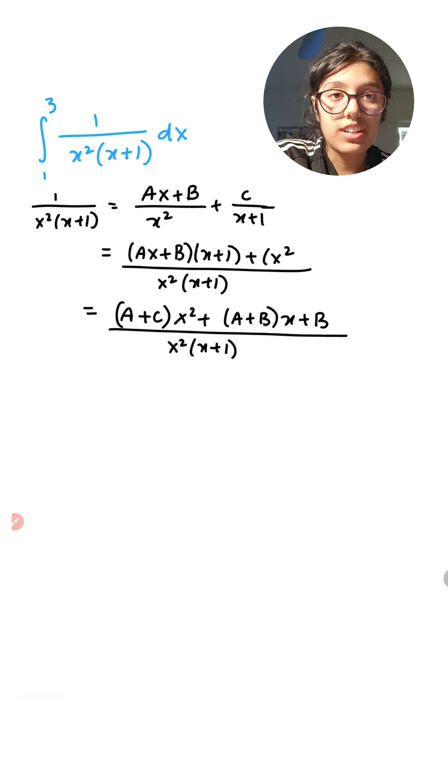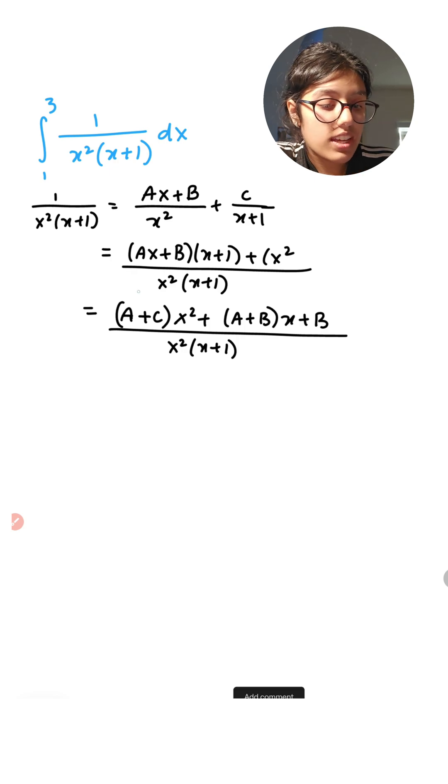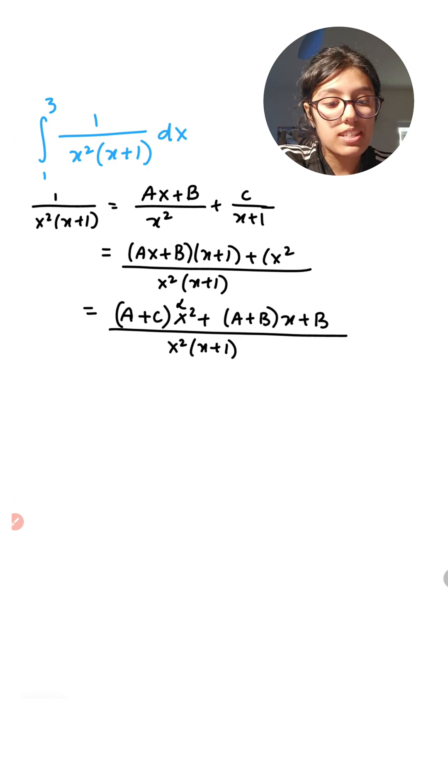All right, so what I did over here, I just skipped a few steps because it's basic algebra. But what I did: I combined the terms that have x squared, I combined the terms that have x, and I combined the constant. In this case it was just B.